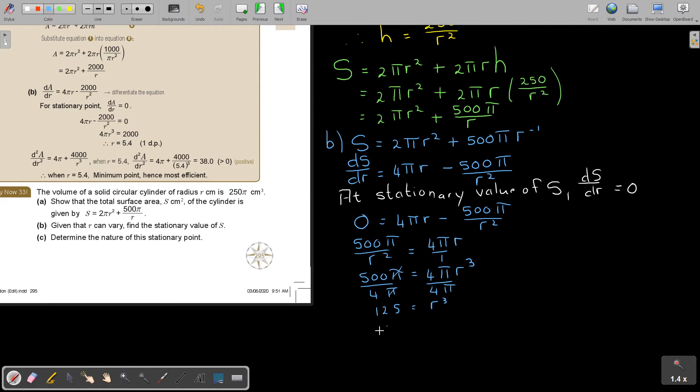Given that, find the stationary value of S. But I must find S. So therefore S is equal to, substitute in there at 5. And if I do that, keep it in terms of pi. I just want to show, so it's 2 times 25, so it's going to be 50 pi plus 100 pi, which will give me 150 pi cm square.